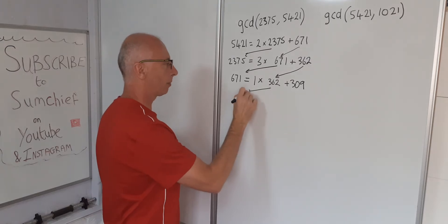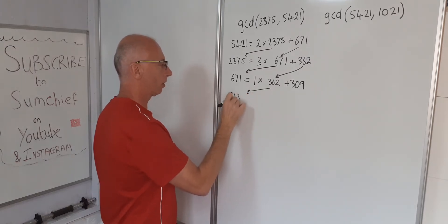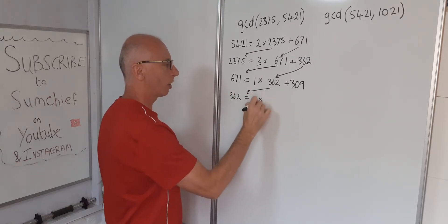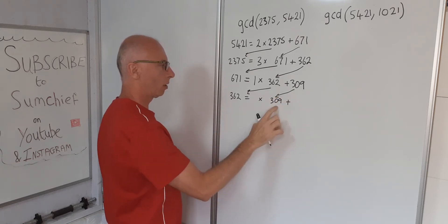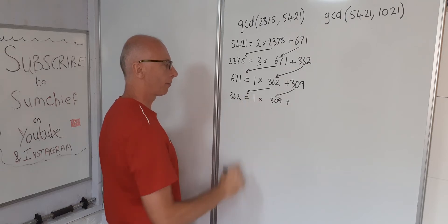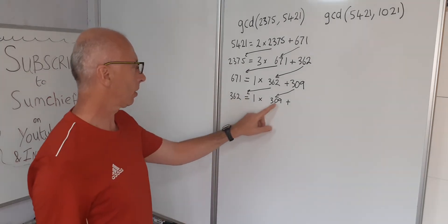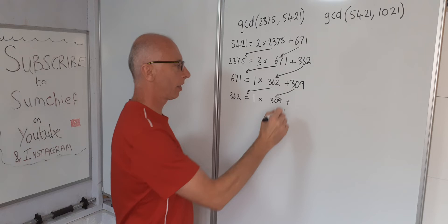Continue with the algorithm. 362 equals something times 309 and there's going to be a remainder. Well we can clearly see it's going to be a 1 again and this time the remainder is going to be 62 subtract 9, that's 53.